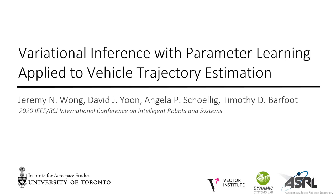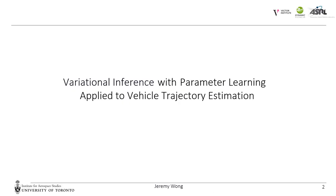Today I will be presenting the paper, Variational Inference with Parameter Learning Applied to Vehicle Trajectory Estimation, for IROS 2020. Let's start by unpacking some of the key terms in our title. We'll first look at what variational inference is and some of its benefits, before moving on to discussing how we can wrap parameter learning into this single framework.